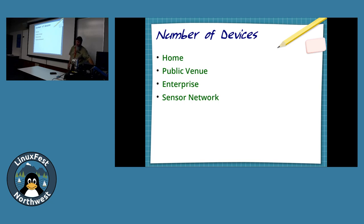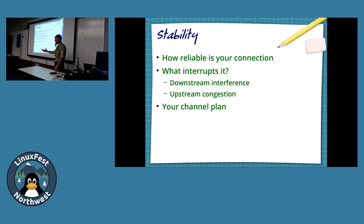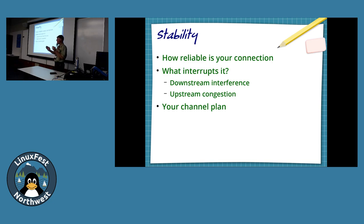Everyone has Wi-Fi at home, and all of those ways are different in how we expect them to behave. Sensor networks include Wi-Fi-enabled thermostats like Nest, Raspberry Pi weather stations, and warehouse barcode scanners — often single-antenna Wi-Fi devices scanning goods.